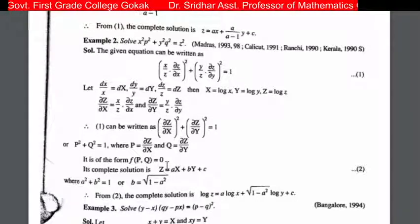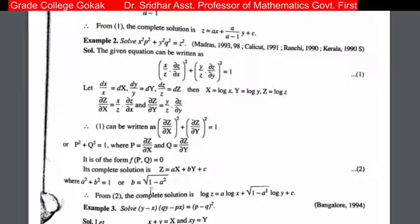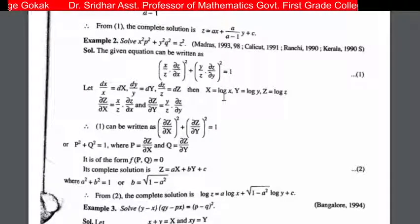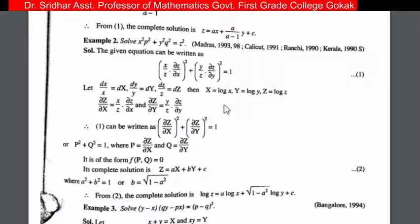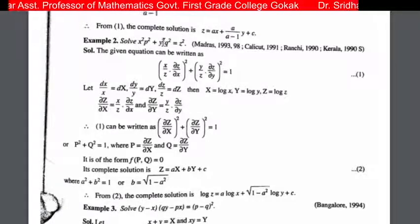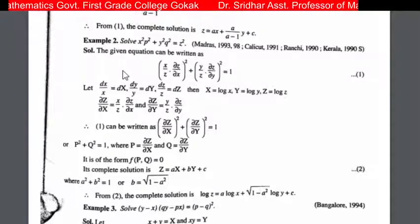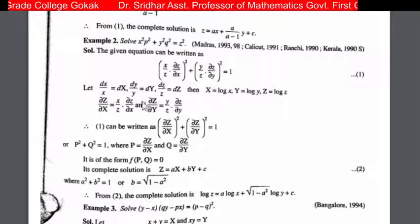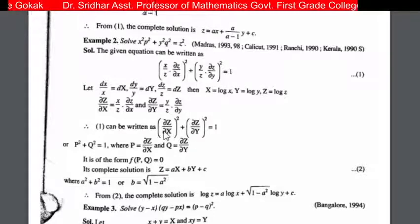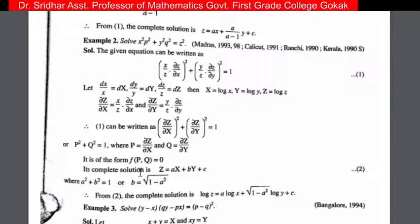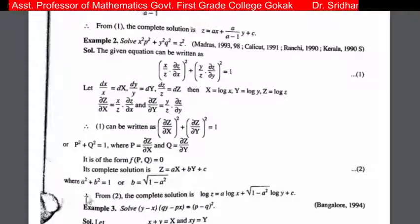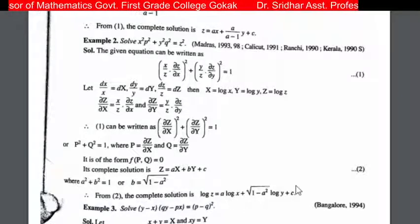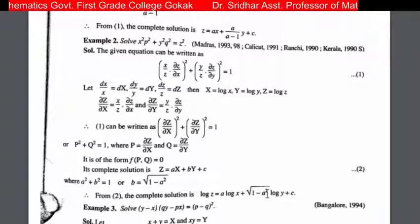After obtaining the solution, we resubstitute capital X equal to log x, capital Y equal to log y, and capital Z equal to log z, because the original problem was in terms of small x, y, z. The final complete solution is log z equal to A log x plus root of 1 minus A square times log y plus C.